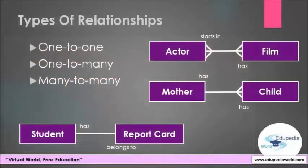There are three different types of relationship between entities. The first one is one-to-one — for example, a student and a report card. A student can have one report card and a report card belongs to only one student. The second is one-to-many — for example, a mother and children. A mother can have many children but a child has only one mother. The third is many-to-many — for example, an actor and a film. An actor stars in many films and a film can have many actors.